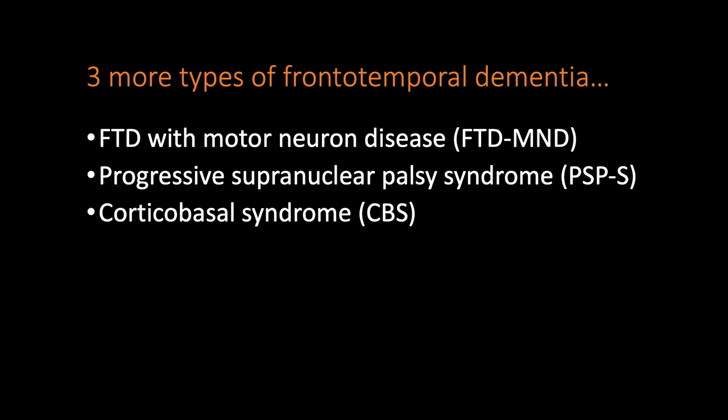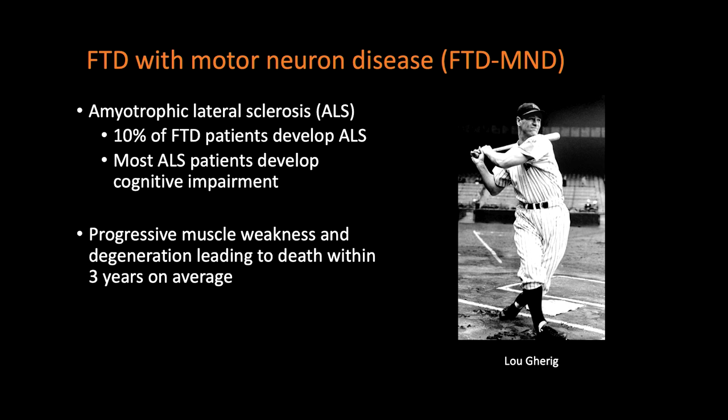Frontotemporal dementia with motor neuron disease is one of the most devastating neurodegenerative diseases. Motor neuron diseases affect neurons connected to muscles, causing muscle weakness and degeneration. The most common is ALS — amyotrophic lateral sclerosis, also known as Lou Gehrig disease. About 10% of patients with frontotemporal dementia will develop ALS later in the disease course, and more than 50% — about 60% — of ALS patients develop some type of cognitive impairment. Sometimes dementia doesn't fully develop because of ALS's relatively short average survival of only three years.